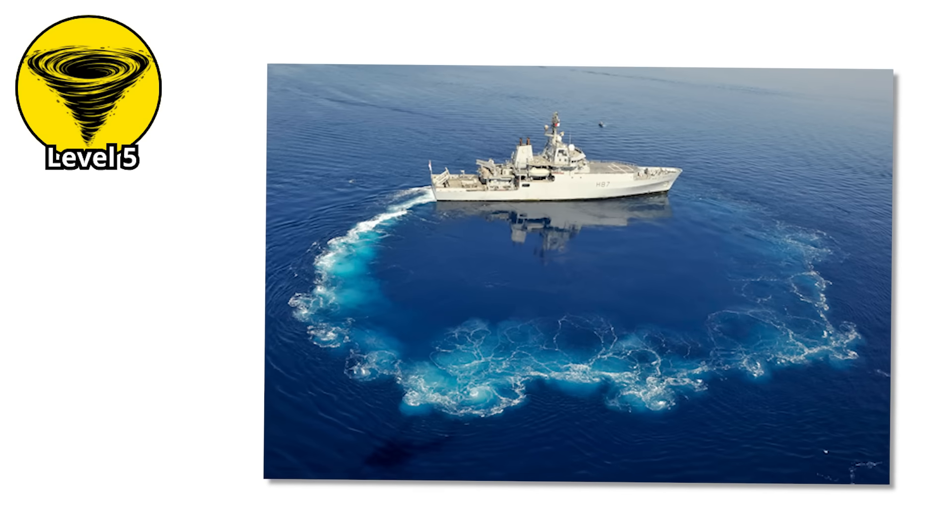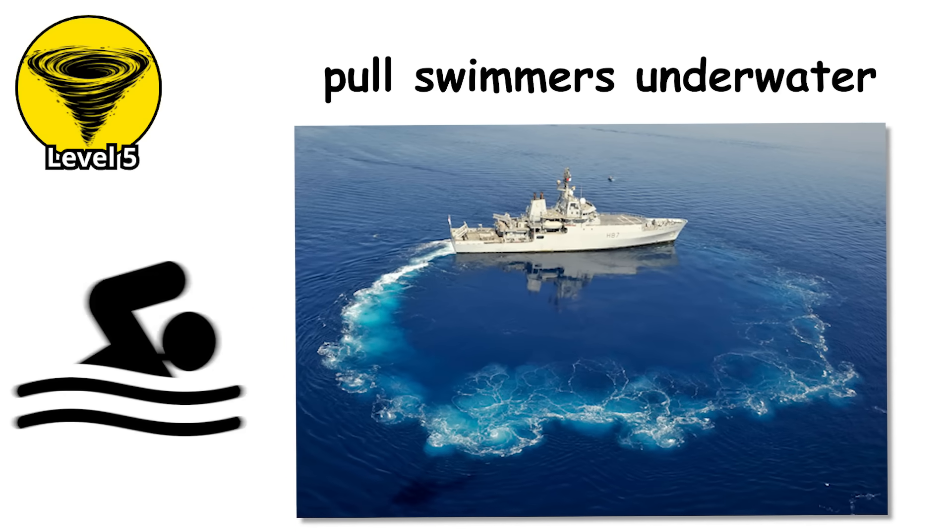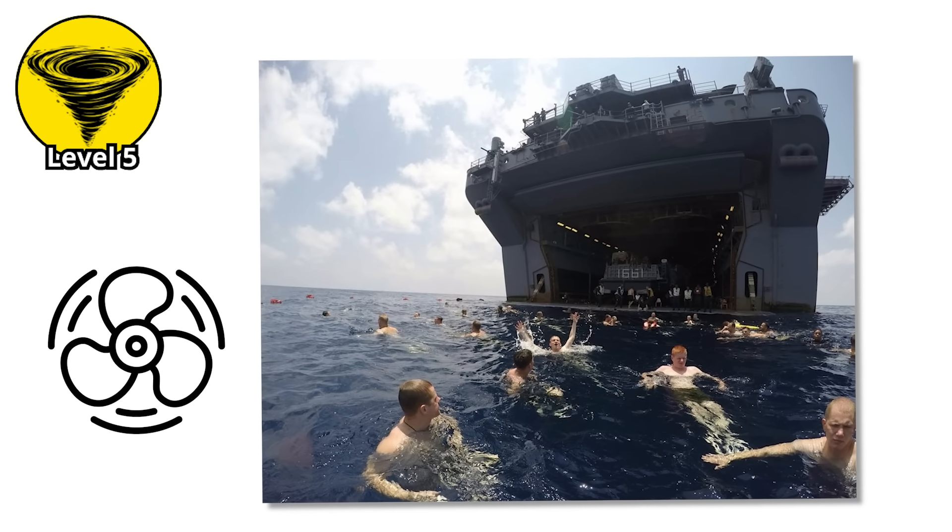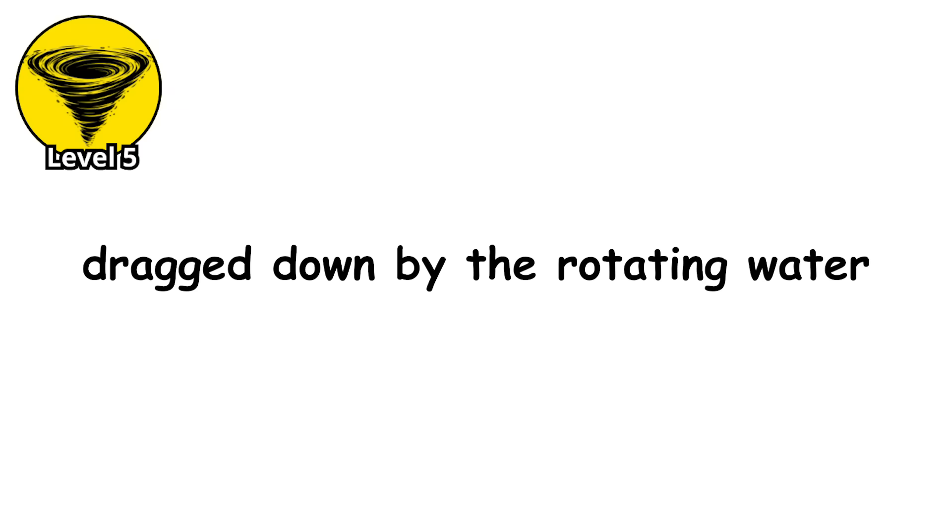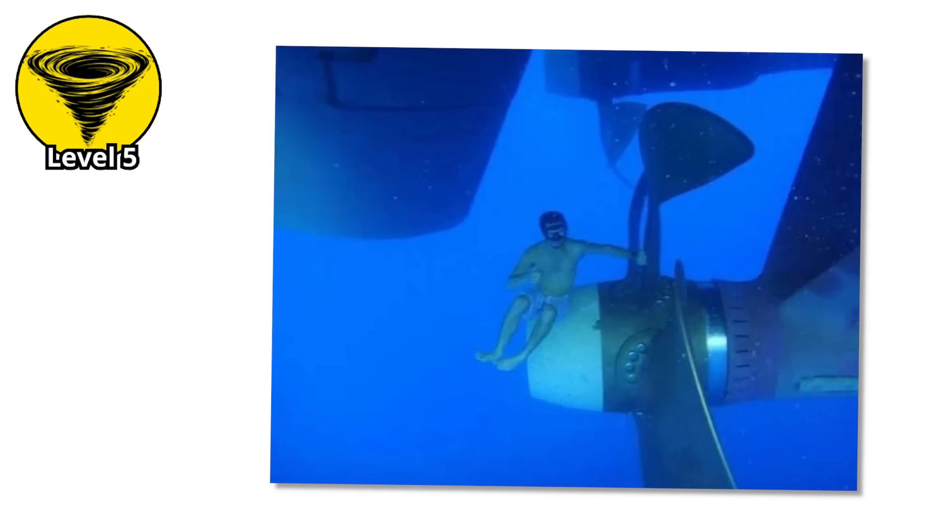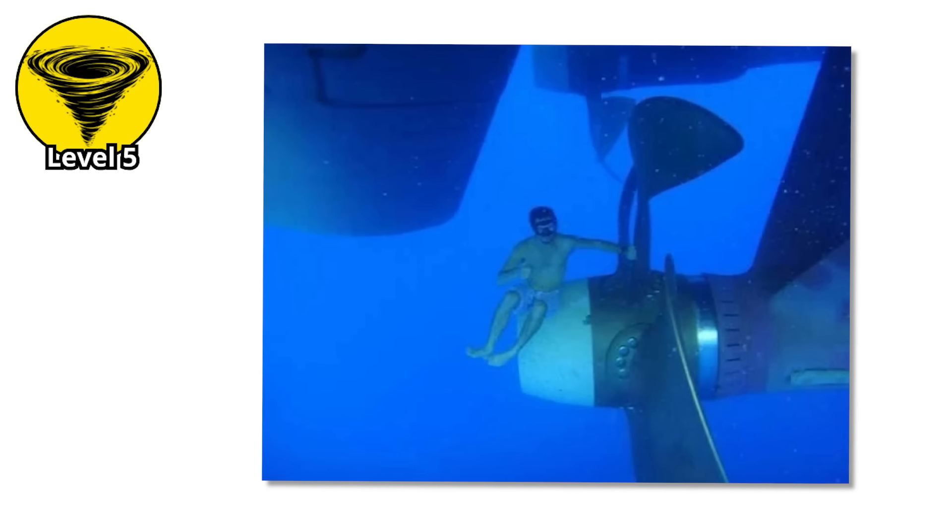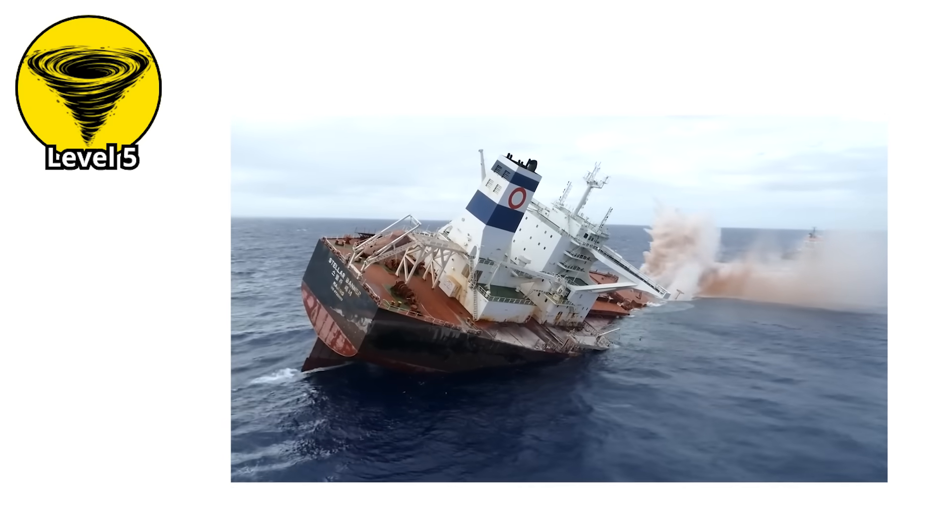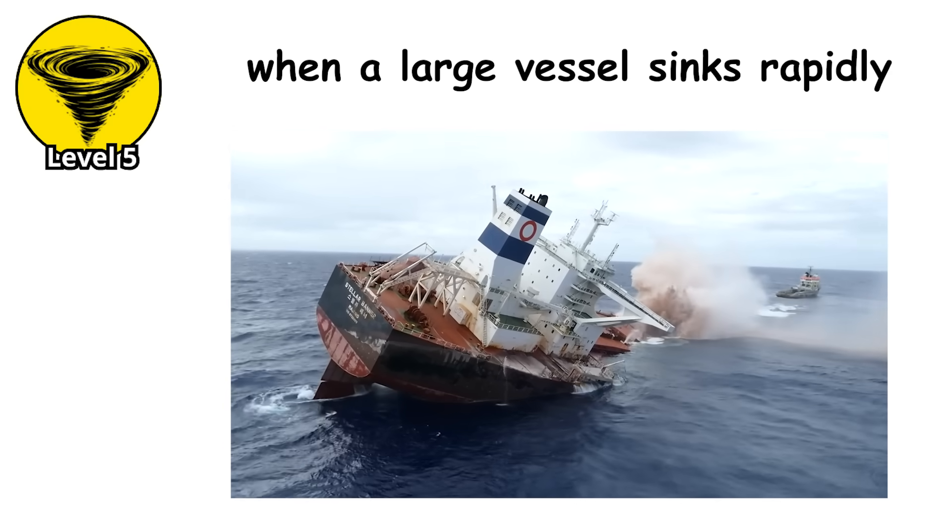A ship turning hard in shallow water can create a strong enough vortex to pull swimmers underwater. There are documented cases of people swimming near a turning vessel and being caught in the propeller wash, dragged down by the rotating water, held under long enough to drown. The victim doesn't even need to be close to the propeller itself, just within the zone of disturbed water the ship creates.